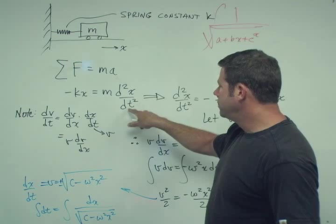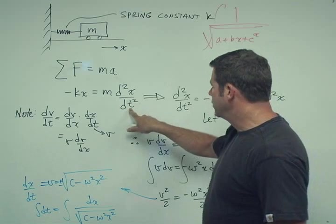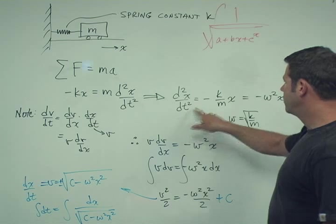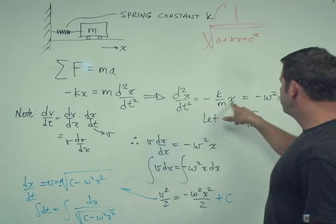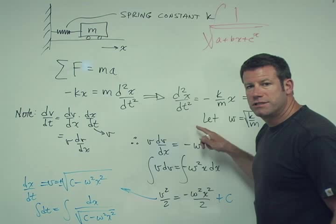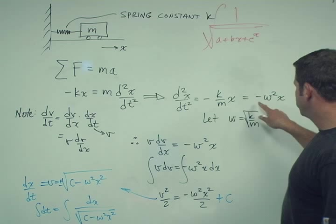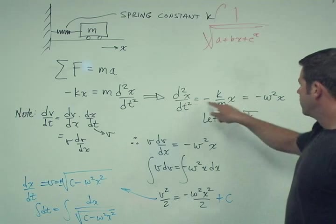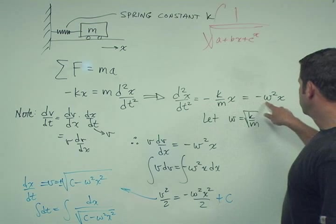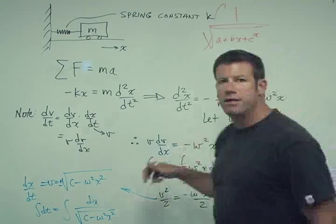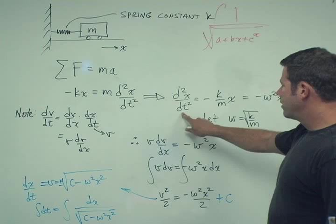And then that equals ma. A is d squared x dt squared. So then from that, we can reduce it to d squared x dt squared equals minus k over mx. Usually people do a substitution here. I'm going to use the letter w to represent the square root of k over m. And then when you reduce it to this form, the second derivative equals minus w squared x. So that's our differential equation, a second order differential equation.